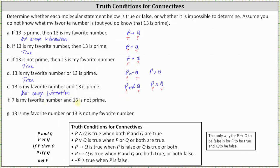For part F: 7 is my favorite number, and 13 is not prime. The statement is in the form of P and Q. We don't know whether P — 7 is my favorite number — is true or false. However, we do know that 13 is not prime is false, so Q is false. The only way P and Q is true is when both P and Q are true, and since Q is false, part F is false.